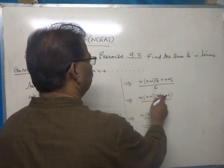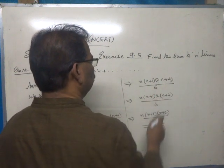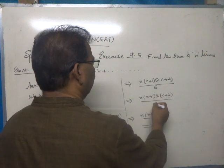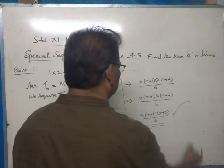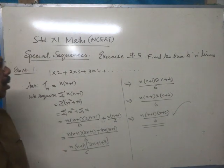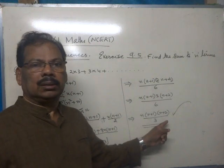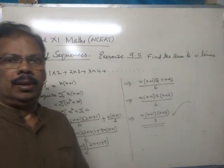Now this 2 can be factored out: 2(n+2). Canceling 2 with 6, we get 1/3. Therefore, the final answer is n(n+1)(n+2)/3.